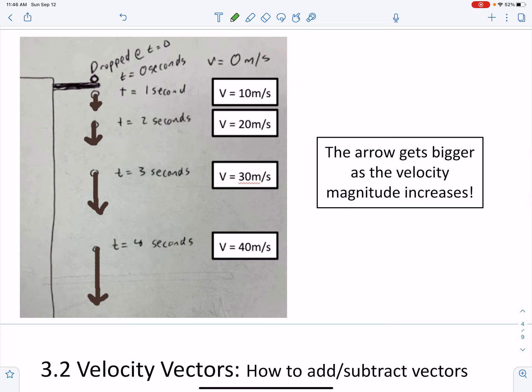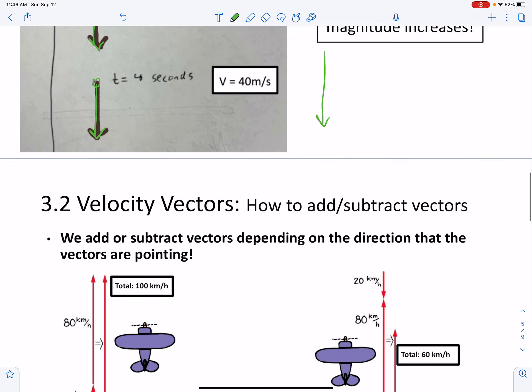If we go back to our free-fall examples, as you drop an object, it picks up speed, right? So as it picks up speed, we can show the velocity with an arrow that's becoming longer and longer each second as the object's picking up speed, and it's moving downwards, so we draw that arrow downwards.